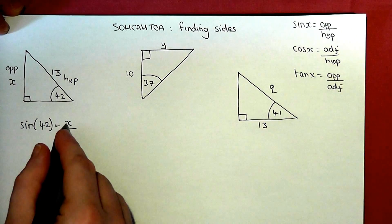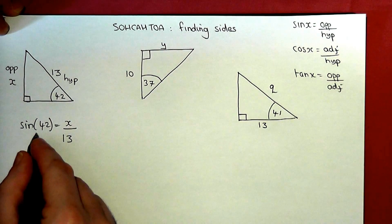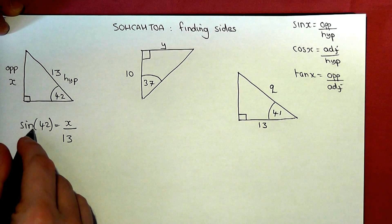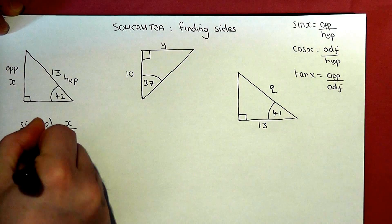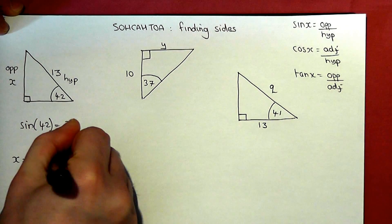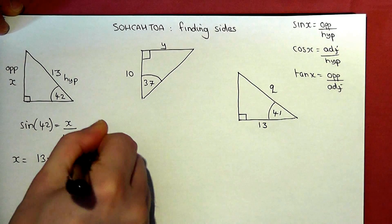So to find x I need to rearrange this equation by multiplying by 13. So x equals 13 times sine 42.